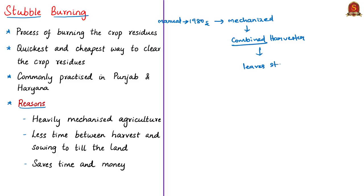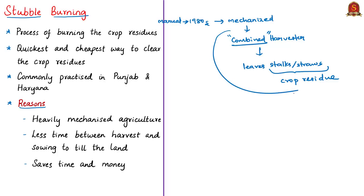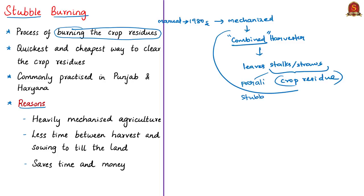This practice of stubble burning came along with mechanized combined harvesting. Clearing these crop residues manually would take months and be expensive, so farmers found a cheap method — at the cost of the environment. They simply burn these crop residues in a single go. The left-out stalk or straw is called stubble, or 'Parali' in Punjabi. Stubble burning refers to burning of these crop residues left over by combined harvesting machines.